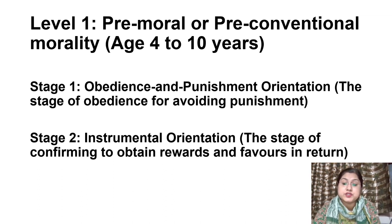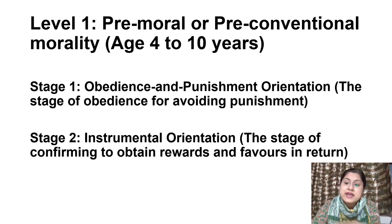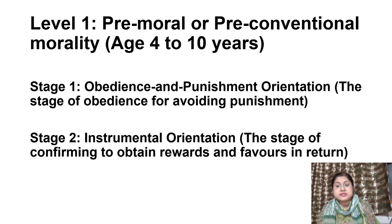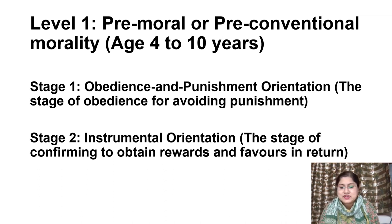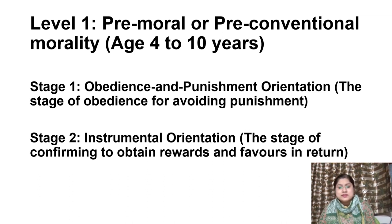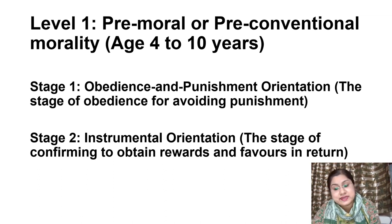Stage 2, which is instrumental orientation, is where right behavior is defined by whatever the individual believes to be in their best interest. Stage 2 reasoning shows a limited interest in the needs of others only to the point where it might further the individual's own interest. Concern for others is not based on loyalty or intrinsic respect but rather a give-and-take mentality. For example, when a child is asked by the parents to do some work, the child asks what they will get in return, and the parent offers something of the child's liking as an incentive.